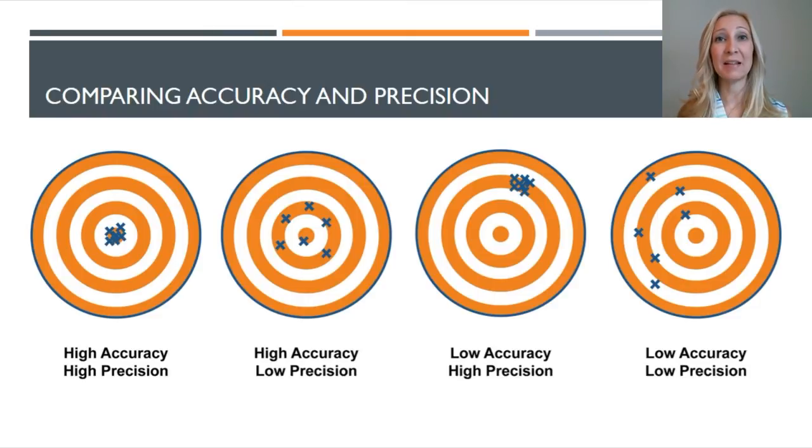Now let's take a look at this last example. You have low accuracy and low precision. This is a really bad experiment because your points aren't anywhere near each other, and they're not near the center. They're not near the bullseye of the target. You would probably want to redo this experiment.